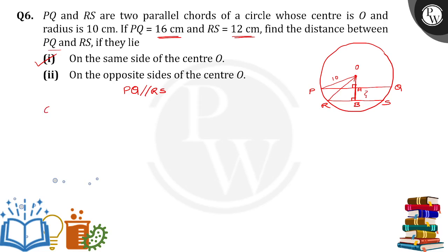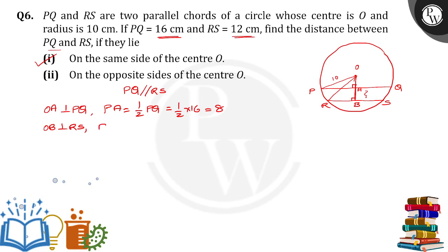Since OA is perpendicular to PQ, PQ will be divided into two equal parts, so PA is equal to half of PQ, which gives us 1/2 × 16 = 8 centimeters. Similarly, OB is perpendicular to RS, so RB is equal to half of RS, giving us 1/2 × 12 = 6 centimeters. So PA = 8 and RB = 6.